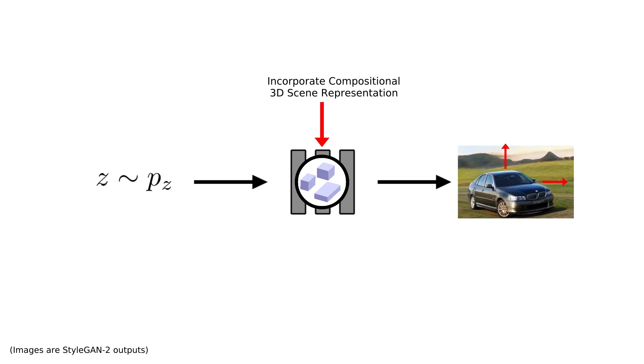To better understand how we achieve this controllable image synthesis, let's have a look at the forward path of our model.